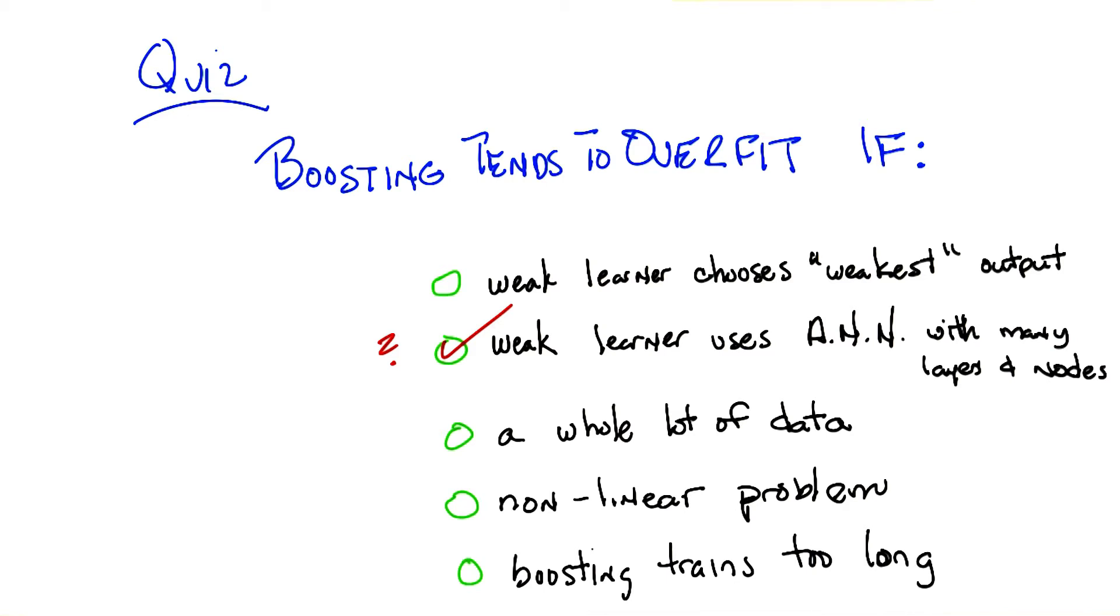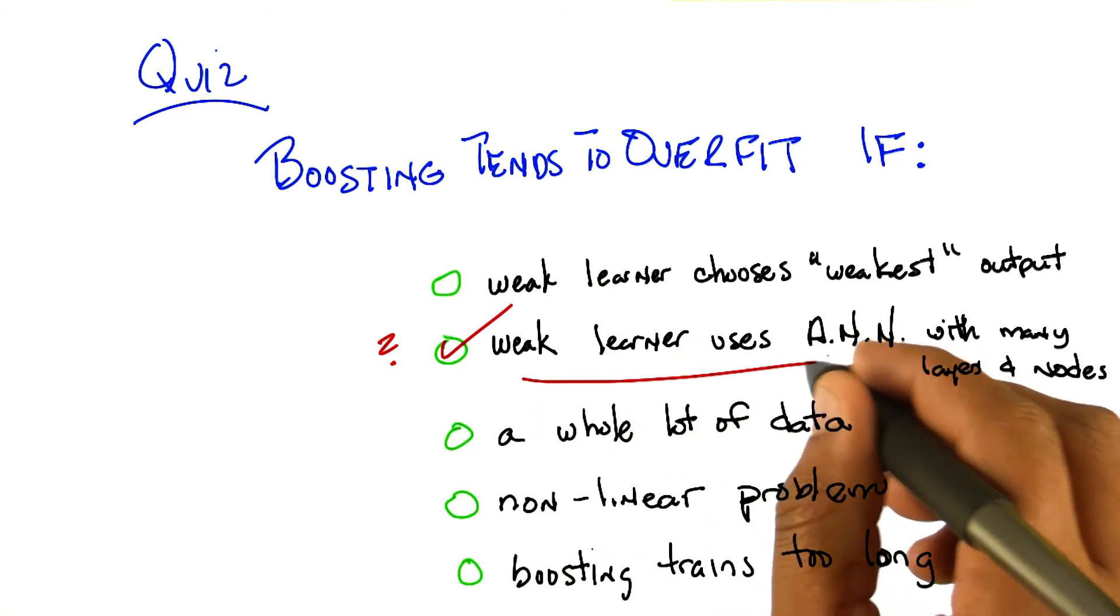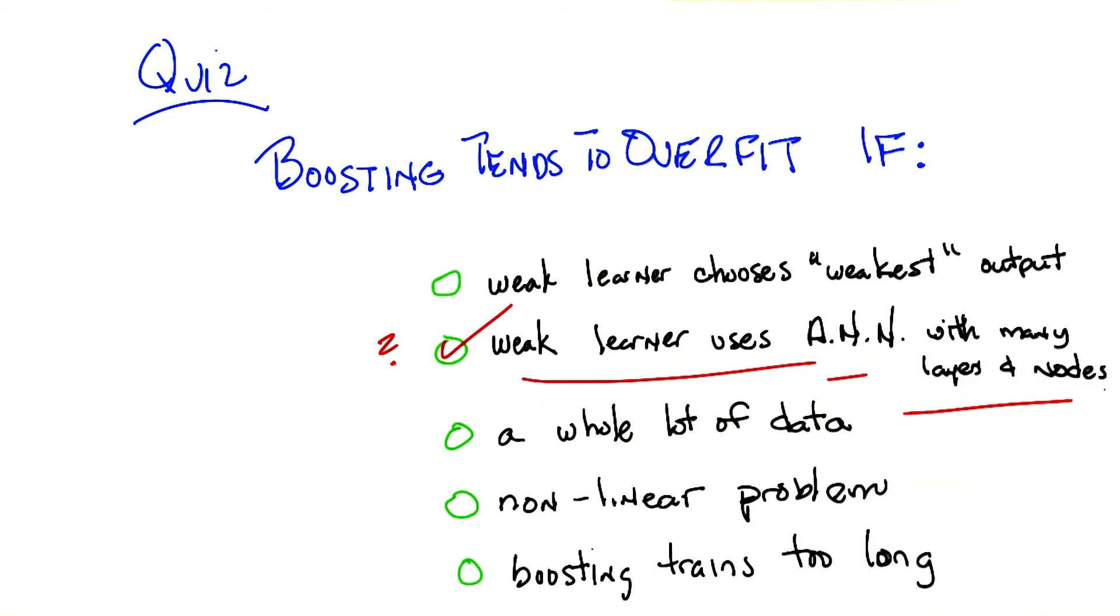Interesting. And not only will it overfit, but it'll be stuck in a horrible loop of error. Right. So that's why this is the sort of situation where you can imagine boosting will overfit. If the underlying learners all overfit, and you can never get them to stop overfitting, then there's really not much you can do.